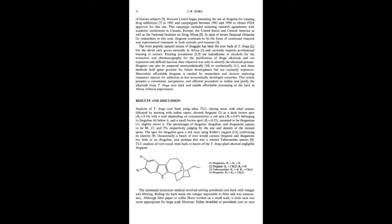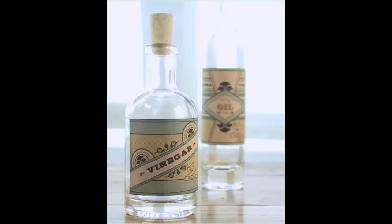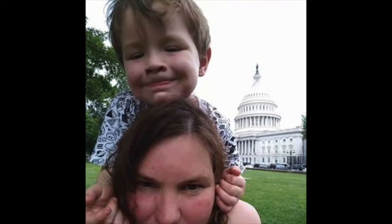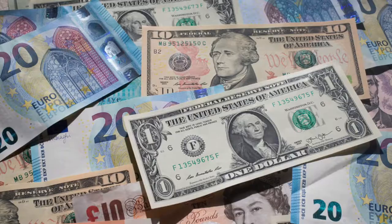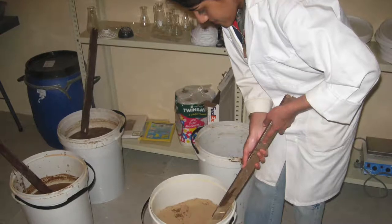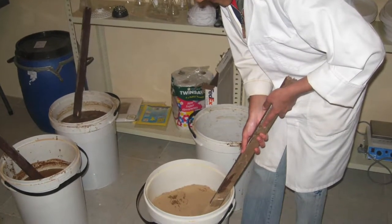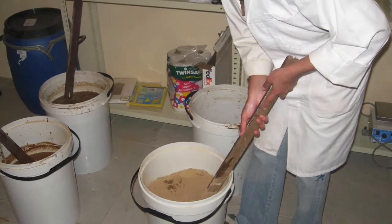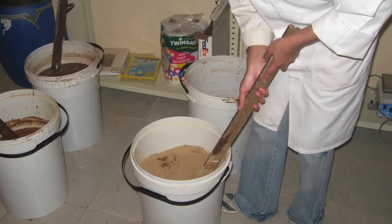I'm not the first chemist to publish an extraction of iboga, but my extraction method specifically uses low-technology equipment and can easily be learned by someone without a background in chemistry. When I started this work in the 90s, my goal was to increase the availability of ibogaine by reducing the cost and increasing the possible places to manufacture it. Stirring the powdered bark with dilute vinegar or very dilute hydrochloric acid resembles the process of alkaloid removal from the chewed bark by stomach acid.